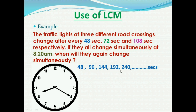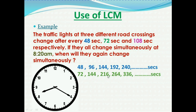The second traffic light changes every 72 seconds. It will first change at 72 seconds, then at 144 seconds, then at 216 seconds, and so on. So the second traffic light changes at every multiple of 72 seconds.